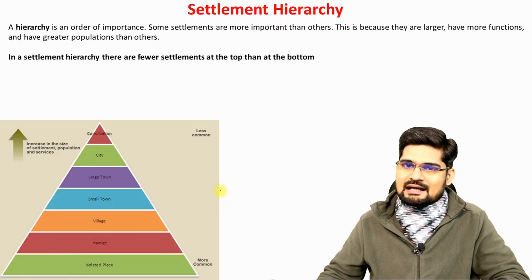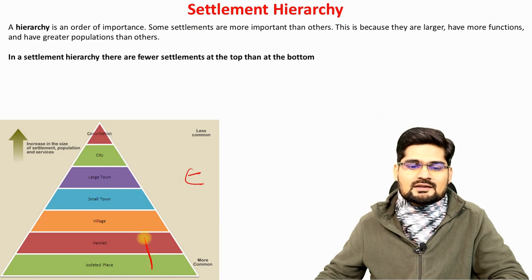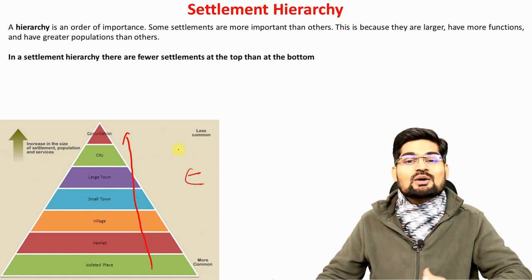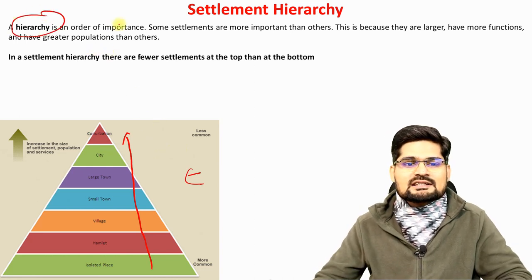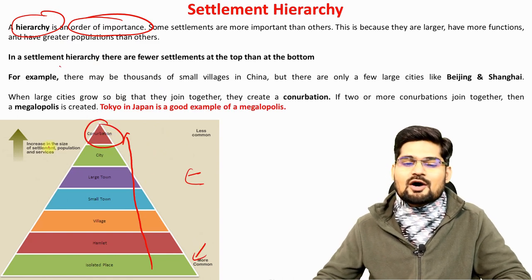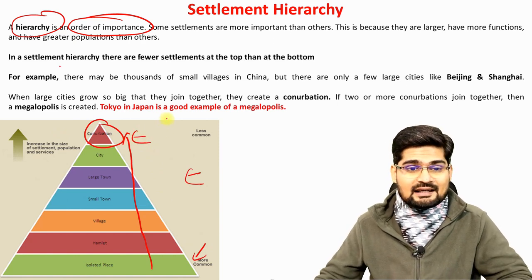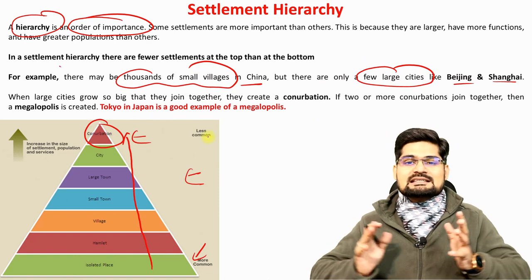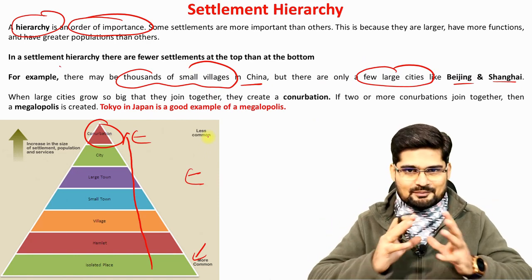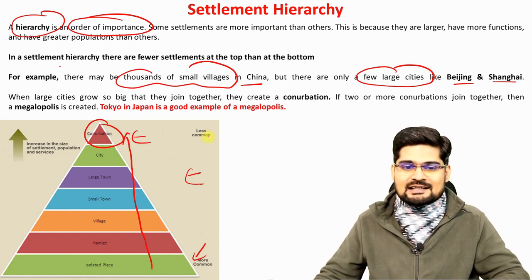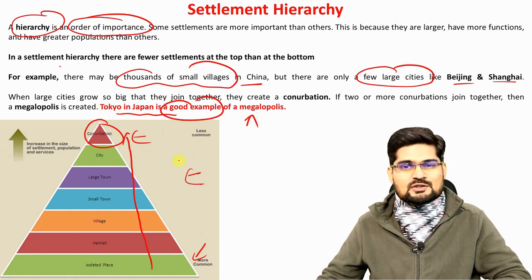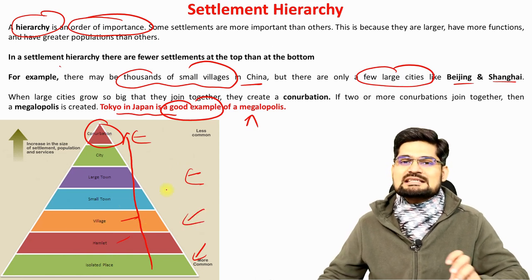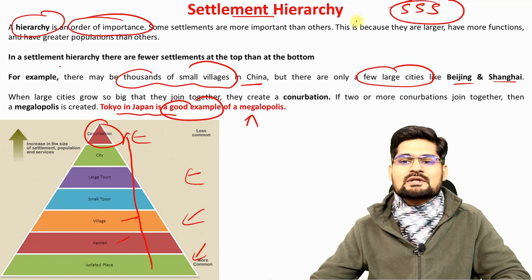Then there is settlement hierarchy, which is the order from isolated settlement to hamlet, village, small town, large town, city, and conurbation. This is the combination of site and situation alongside other factors. Hierarchy is an order of importance — at the bottom it is more crowded, but as you go up it is less crowded yet more diversified. There may be thousands of small villages in China but only a few large cities like Beijing and Shanghai. Tokyo is a good example of a megalopolis. Site, situation and settlement hierarchy — the 3S concept — are very important to understand the factors.